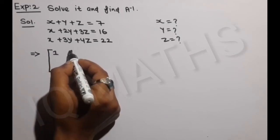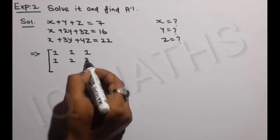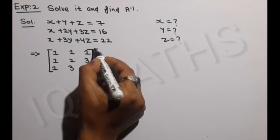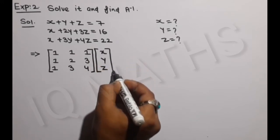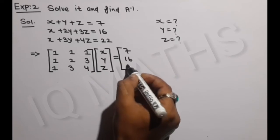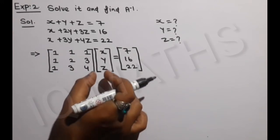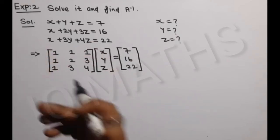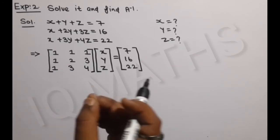तो यहाँ पर हम matrix लिखेंगे: [1, 1, 1; 1, 2, 3; 1, 3, 4] और x, y, z - this is equal to 7, 16, 22. तो बच्चों हमने इस condition को matrix की form में convert कर लिया। जब बच्चों हम x, y, z और इस matrix को आपस में multiply करेंगे तो हमारी left hand side वाली condition बन जाएगी। यह मैंने आपको पीछे सिखाया हुआ है कि कैसे दो matrix को हम multiply कर सकते हैं।